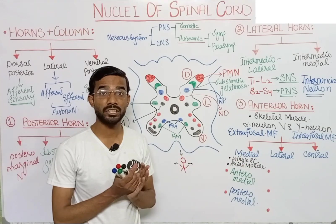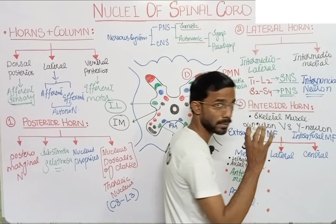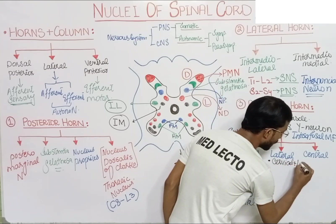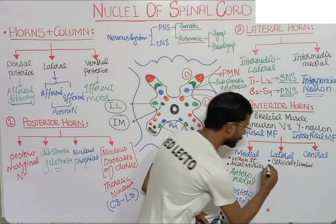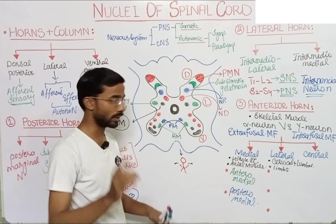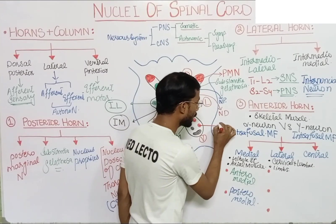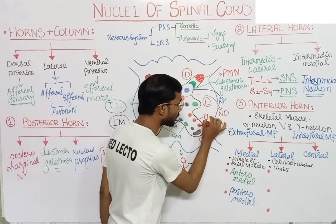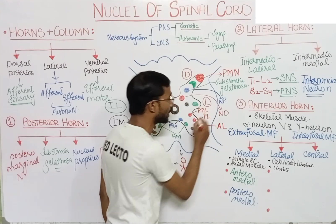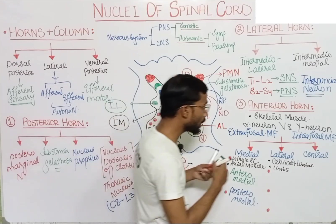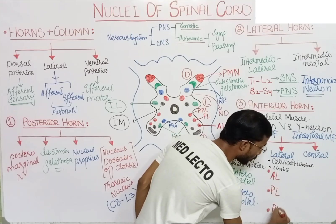The lateral nuclei of the anterior horn are present in two regions: cervical and lumbar. This nucleus supplies nerves to the appendages or limbs. The lateral nucleus is categorized into three parts: the first is the anterolateral, the second is the posterolateral, and the third is the post-posterolateral nucleus.